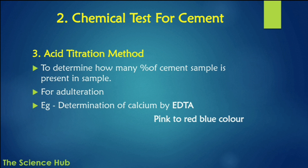The acid titration method determines what percentage of the cement sample is present, as cement is made up of calcium. For example, determination of calcium by EDTA measures how much quantity it takes to change the color from pink to blue, indicating the calcium content and detecting adulteration.